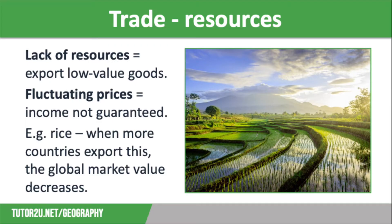However, if several countries are exporting huge quantities of rice, then the value of rice on the global market will decrease. Another example is Zambia in South Central Africa, whose main export commodity is copper. This used to be a lucrative material for the country, as the global demand for copper for piping was great.